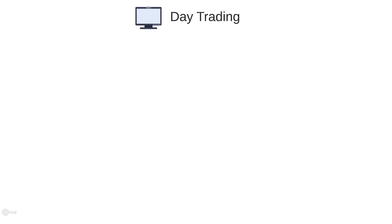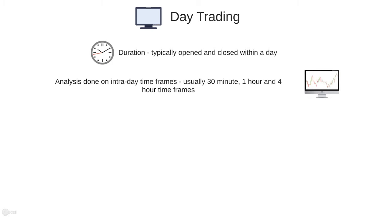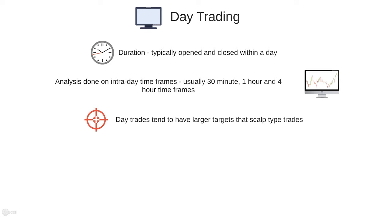Let's move on to day trading. Day trading refers to trades that are typically opened and closed within a day. These trades typically last anywhere from 15 minutes to a number of hours. The analysis for these trades is usually done on the 30 minute, 1 hour and 4 hour time frames, although this is just a guide. These trades tend to have larger targets than when scalping, as typically a trader will look to take advantage of one of the main moves a market makes within that day. Using the ATR is a good way to gauge how large the moves targeted by this style may be on the markets you are looking at.